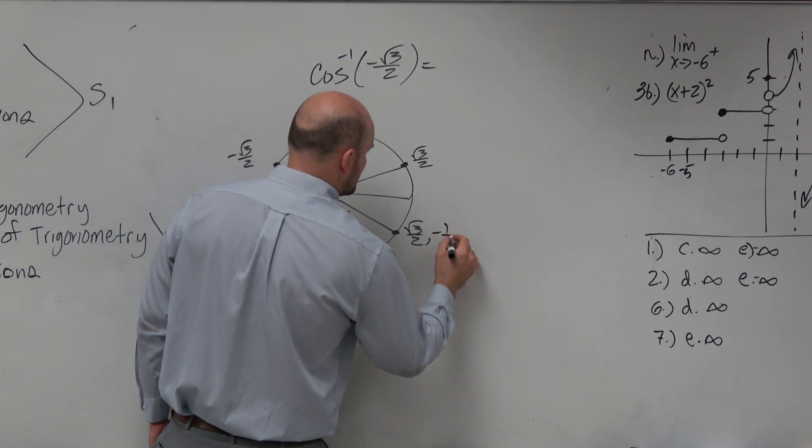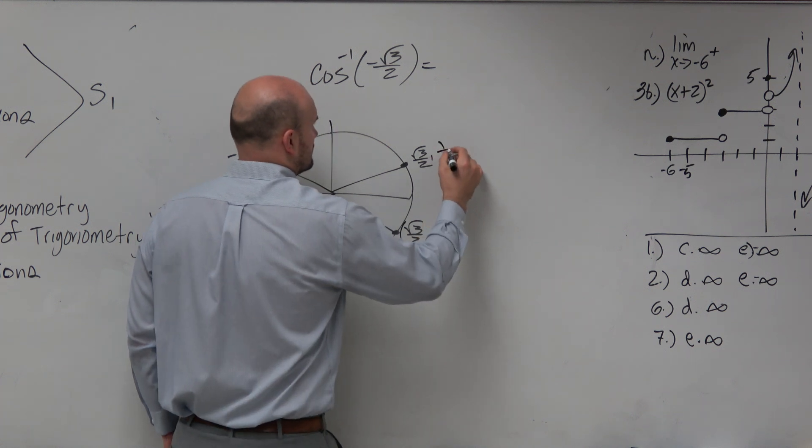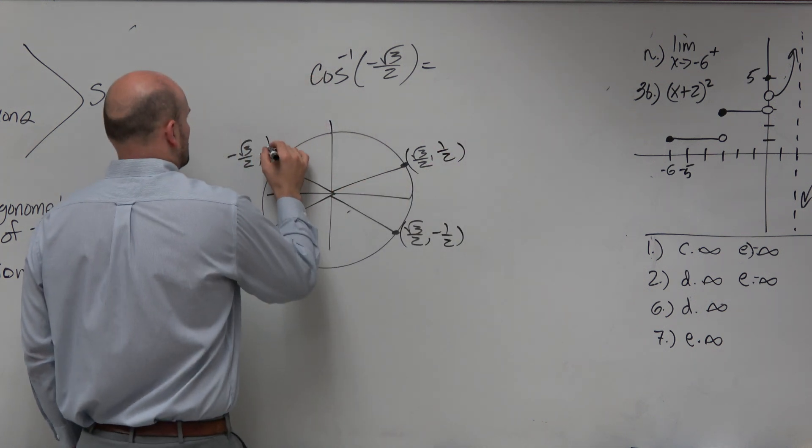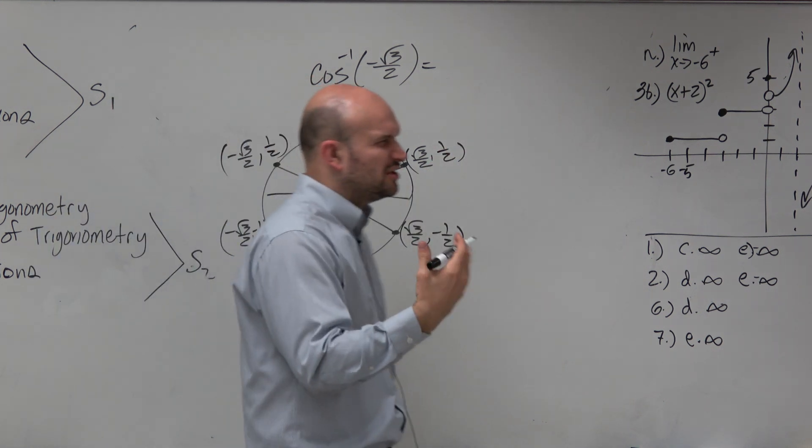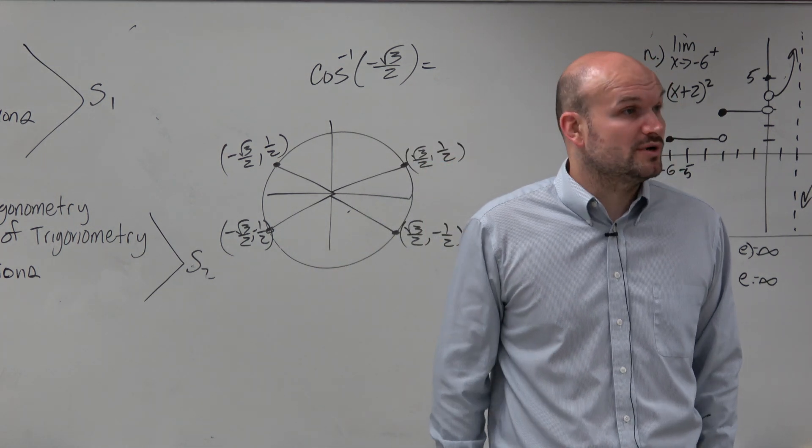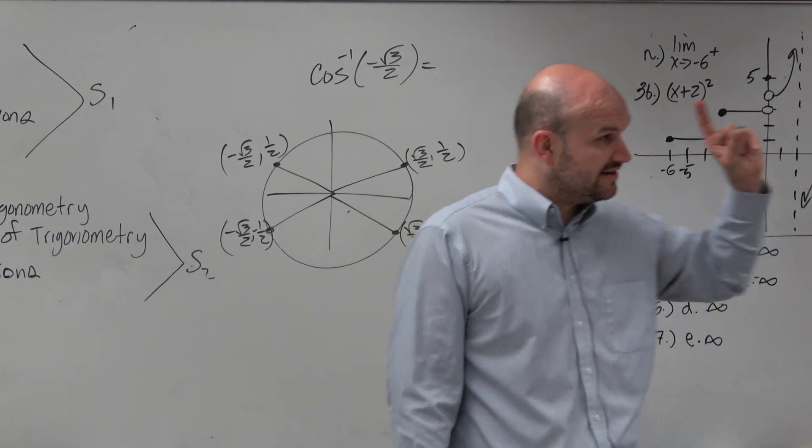If you guys know your unit circle, I'm just going to elaborate a little bit more. But that's all the points where x is equal to square root of 3 over 2. But we're only looking for when it's negative.